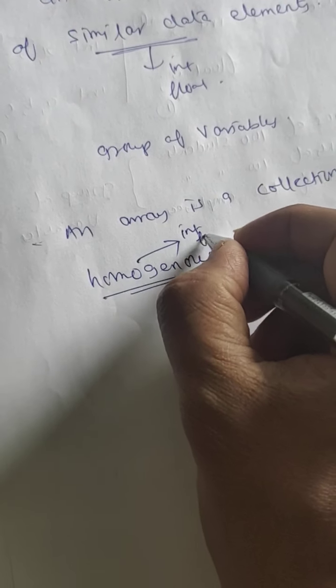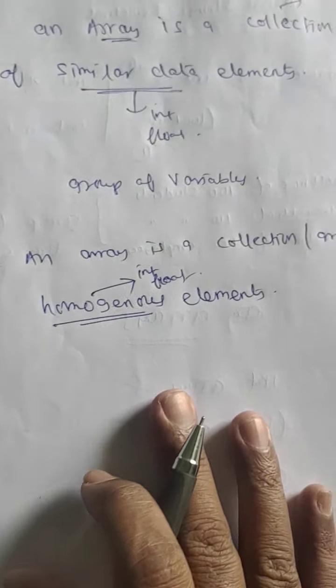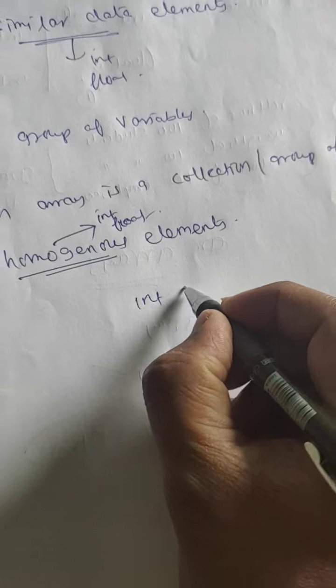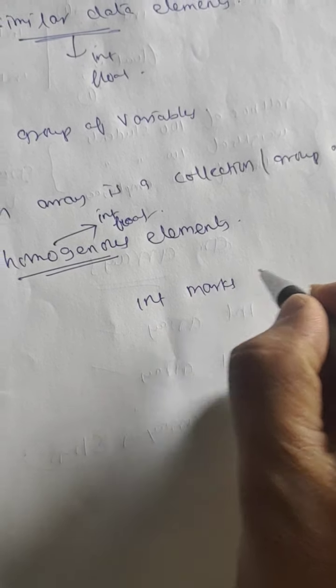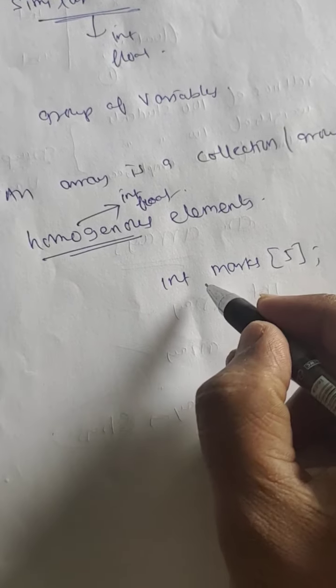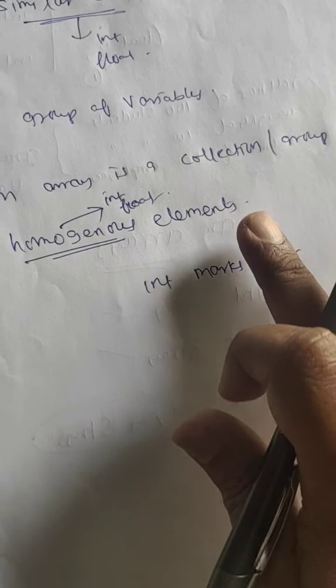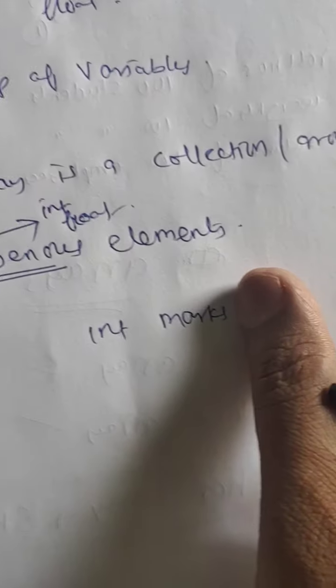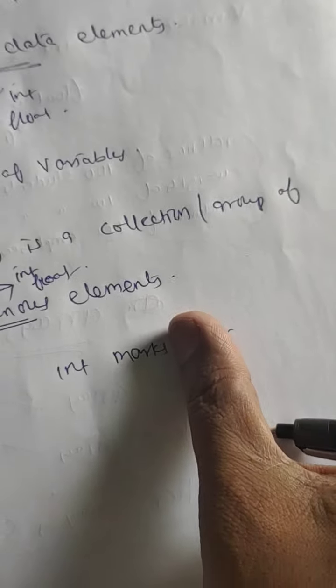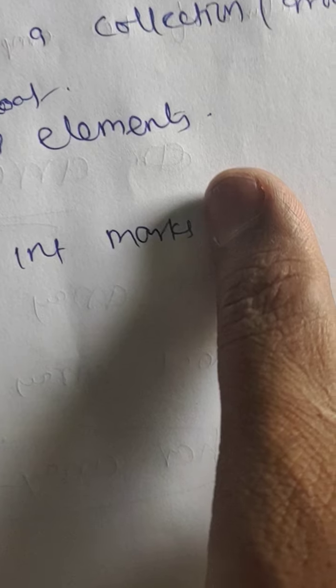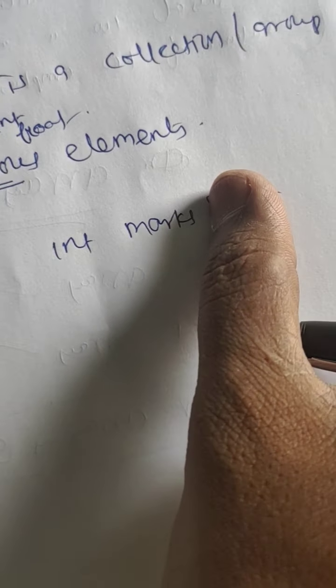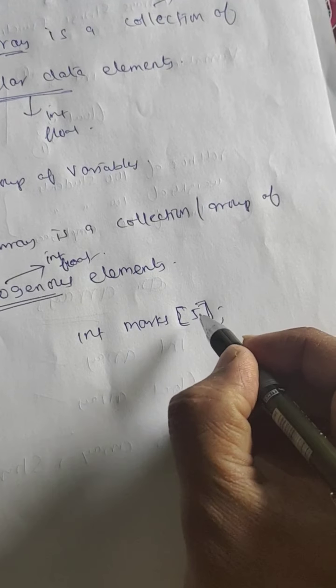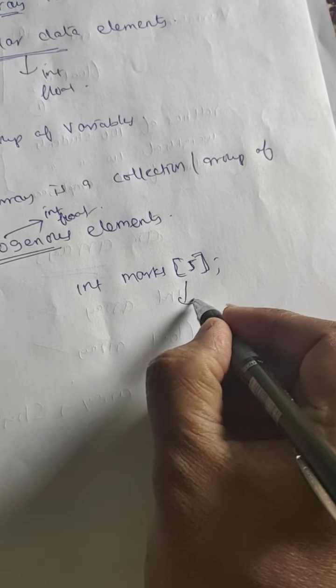For example, int marks[5]. So here if you ignore the brackets it is int marks - single variable. But when the square brackets are used and a size is mentioned, that is called size of the array.